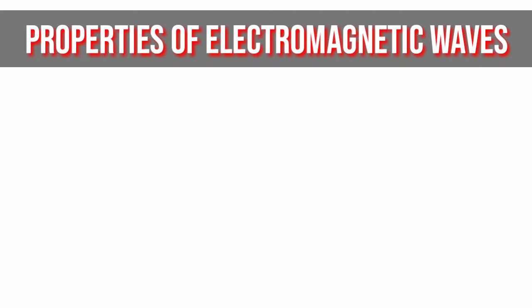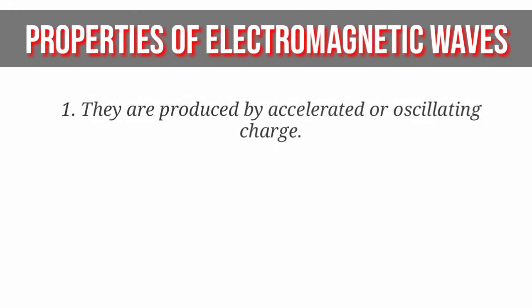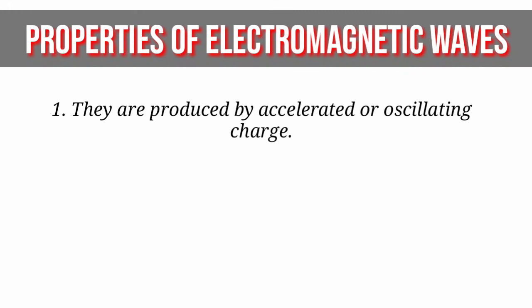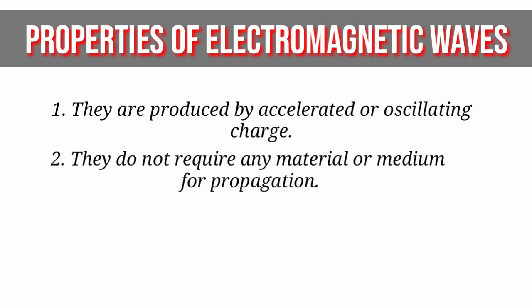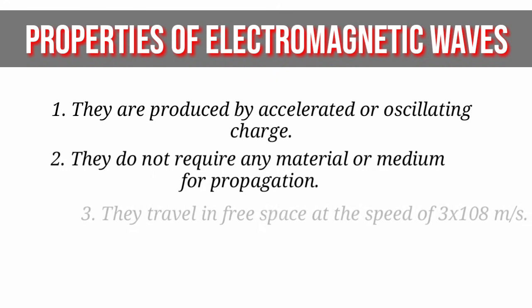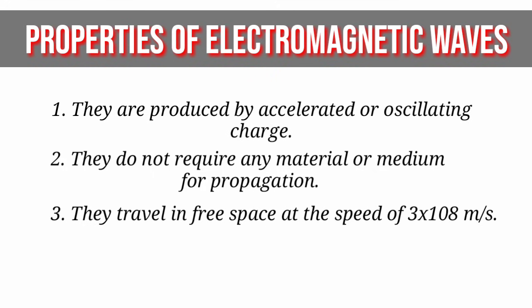Electromagnetic waves are known to possess the following properties: 1. They are produced by accelerated or oscillating charge. 2. They do not require any material or medium for propagation. 3. They travel in free space at the speed of 3 times 10 raised to the 8th power meters per second.